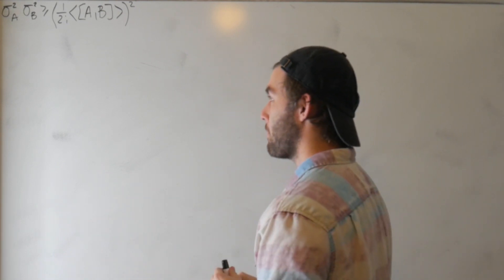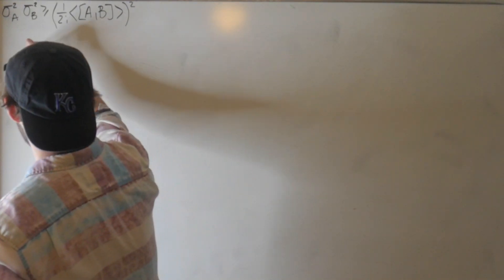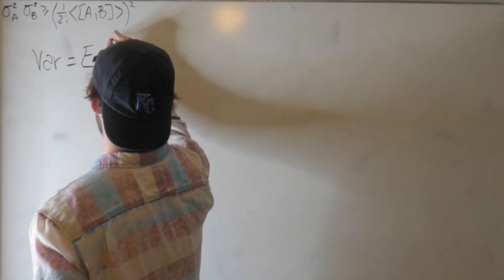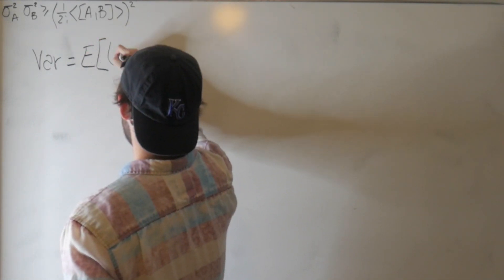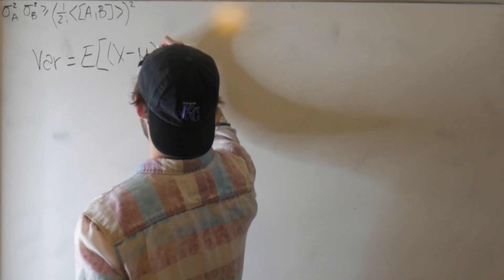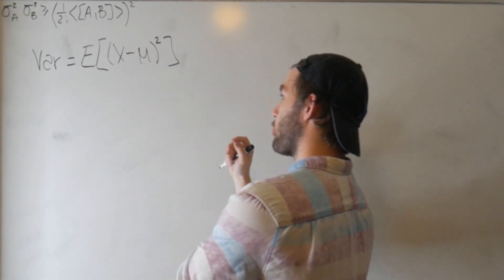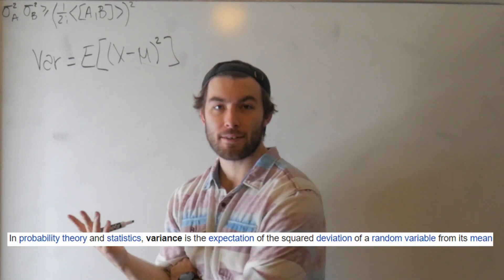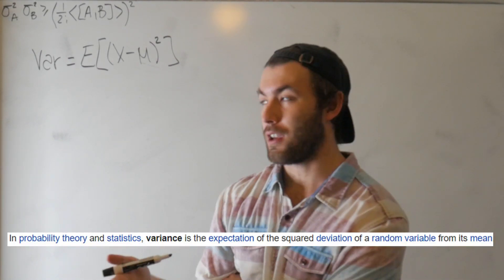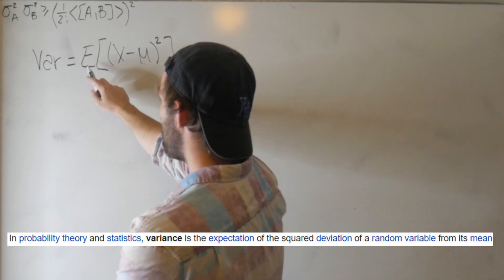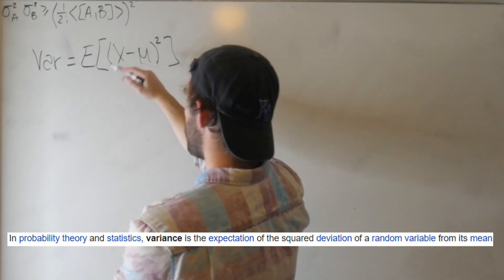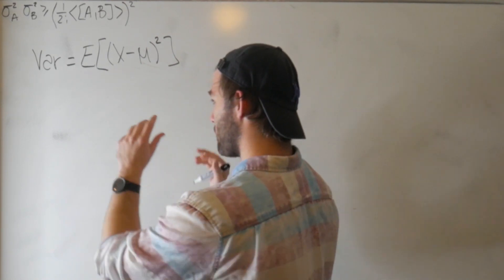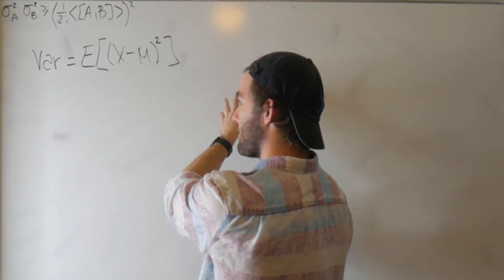The equation we're going to use as our jumping-off point is that the variance is equal to the expected value of some random variable minus the mean, squared. The variance is the square of the standard deviation, and it's equal to the expected value of (x minus mu) squared. Let's define our terms and then translate.